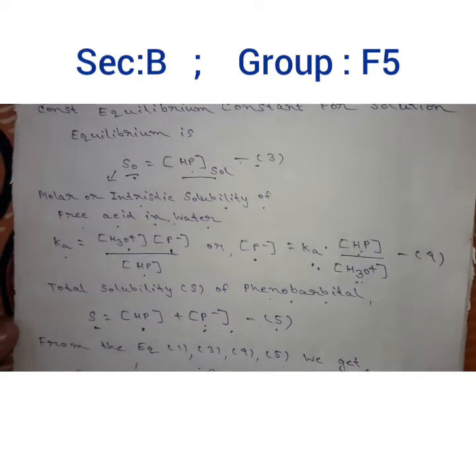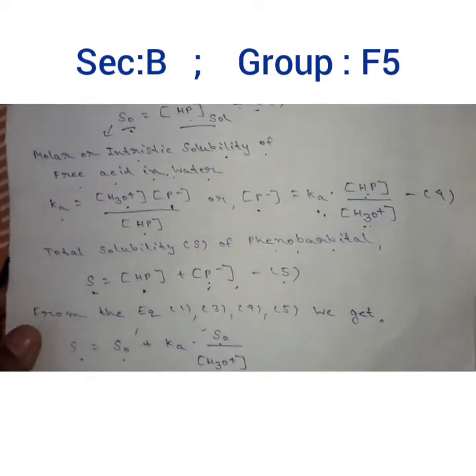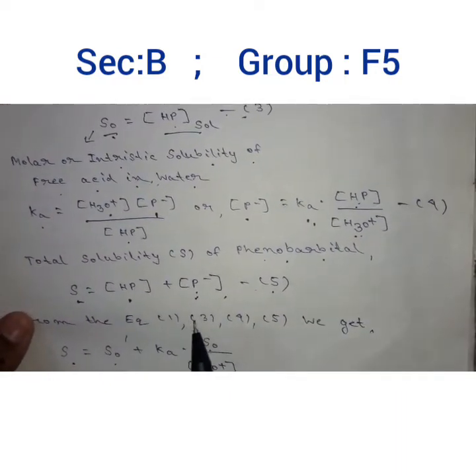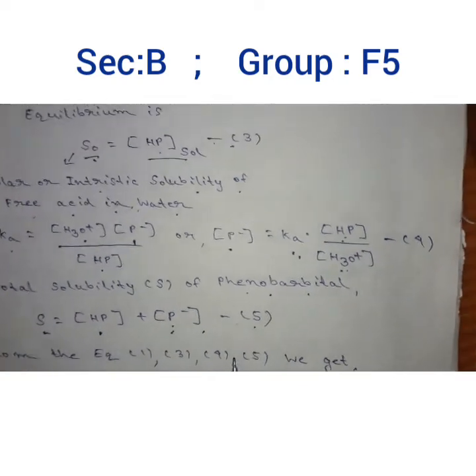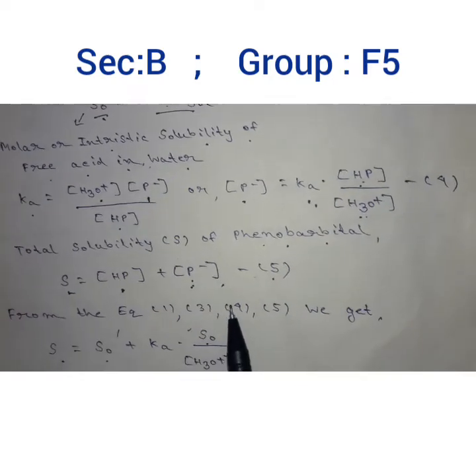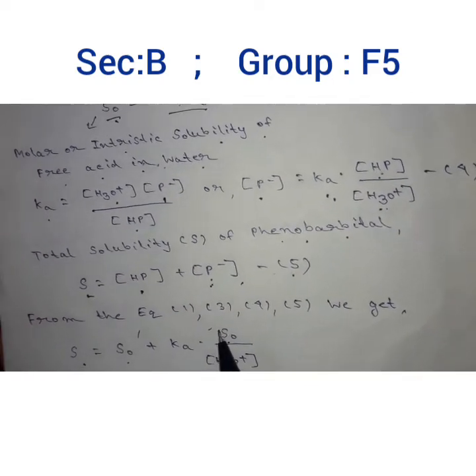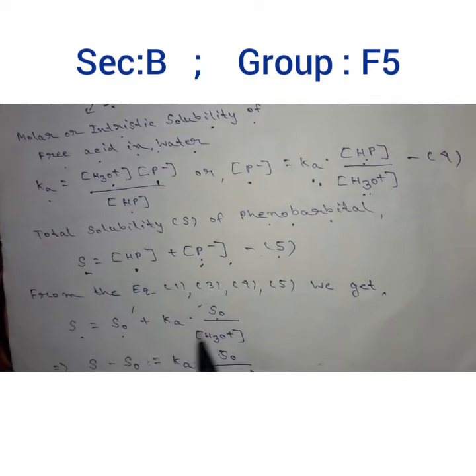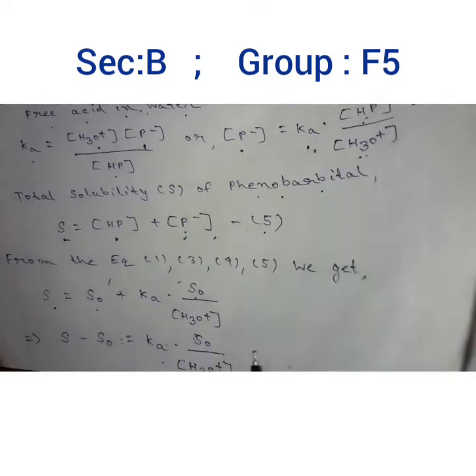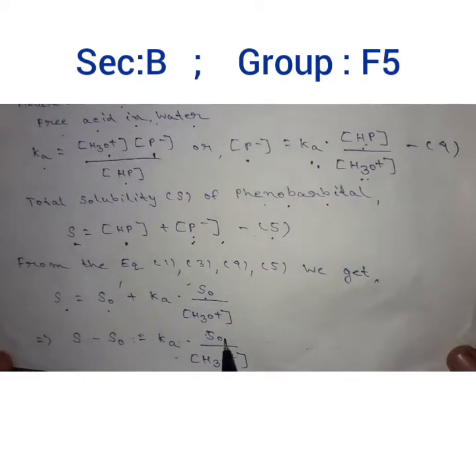The total solubility of phenobarbital is S = [HP] + [P-]. This is the fifth equation. From equations 1, 3, 4, and 5 we get S = S0 + Ka·S0/[H3O+].